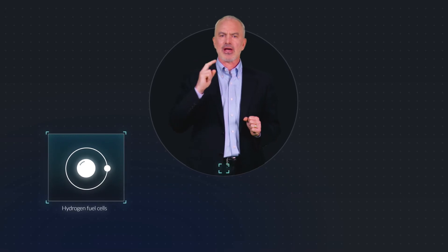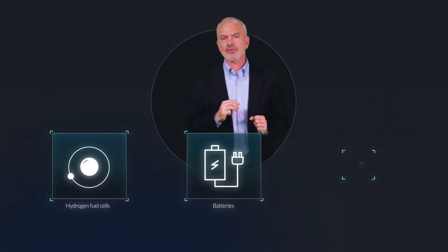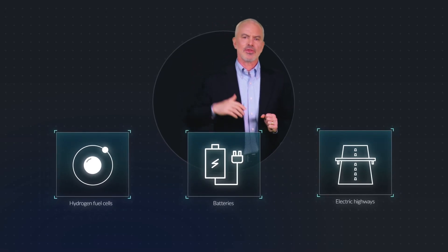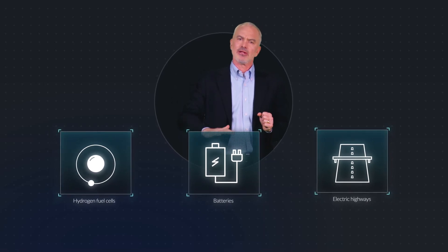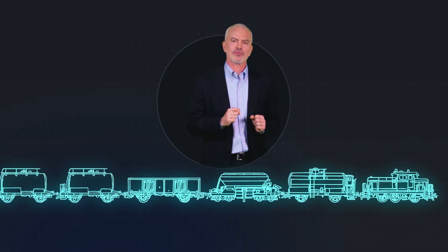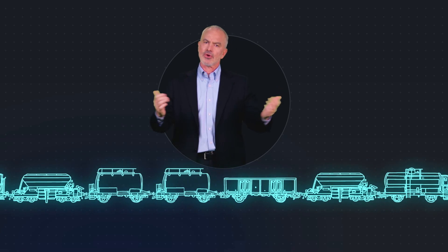To make them carbon neutral, three technologies are in play: hydrogen fuel cells, batteries, and hybrid trucks traveling on electric highways with either overhead or embedded catenary lines. A fourth option is to shift freight from truck to train.